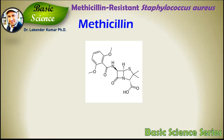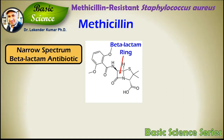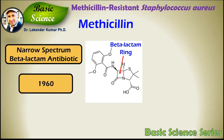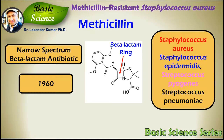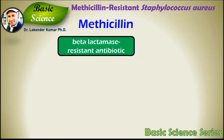Methicillin is a narrow-spectrum beta-lactam antibiotic of the penicillin class. Narrow-spectrum means it kills specific bacterial pathogens. It was discovered in 1960. At one time, methicillin was used to treat infections caused by certain gram-positive bacteria including Staphylococcus aureus, Staphylococcus epidermidis, Streptococcus pyogenes, and Streptococcus pneumoniae. Methicillin is no longer effective against these organisms due to the emergence of resistance.